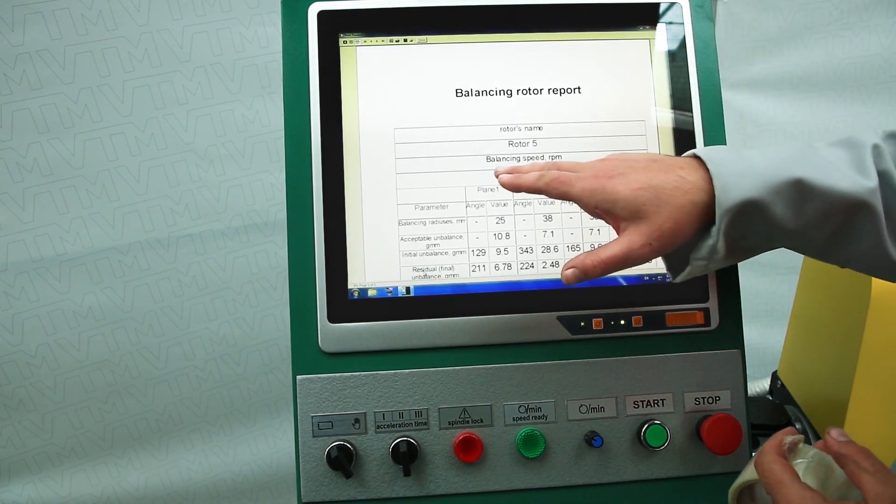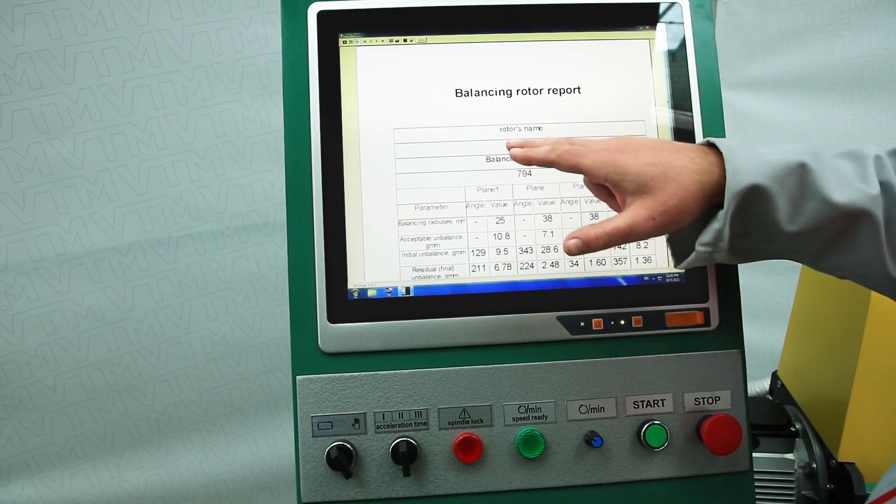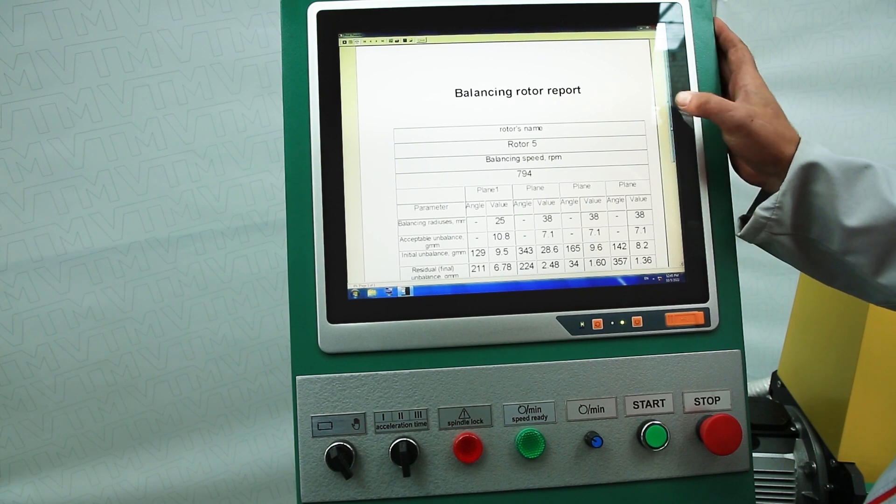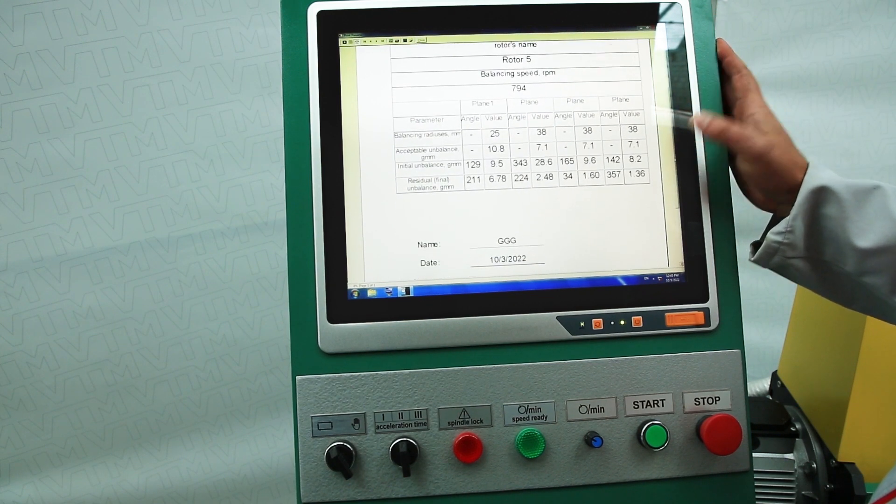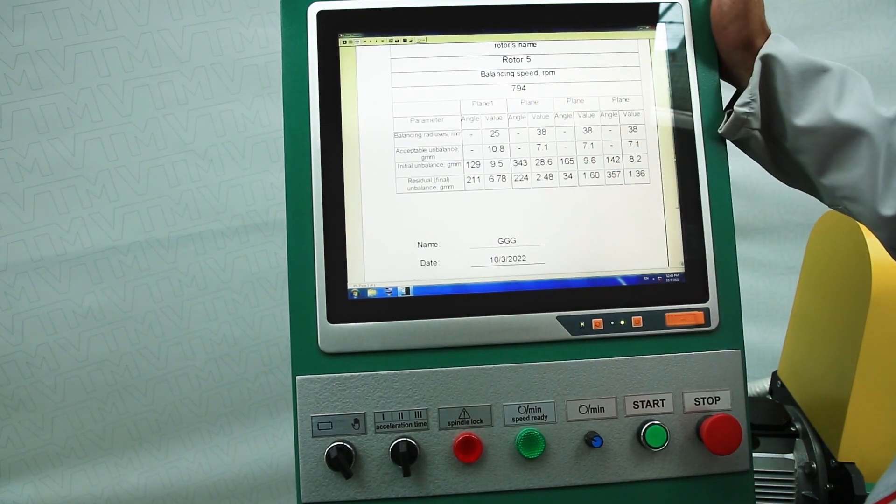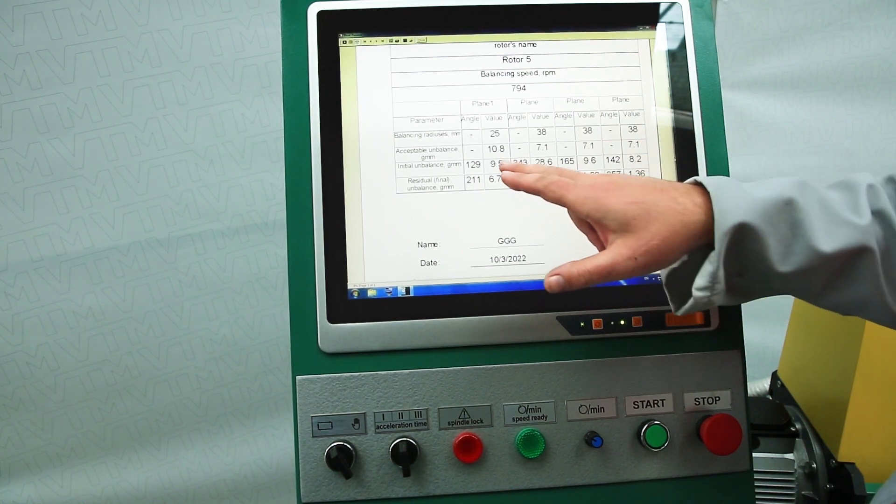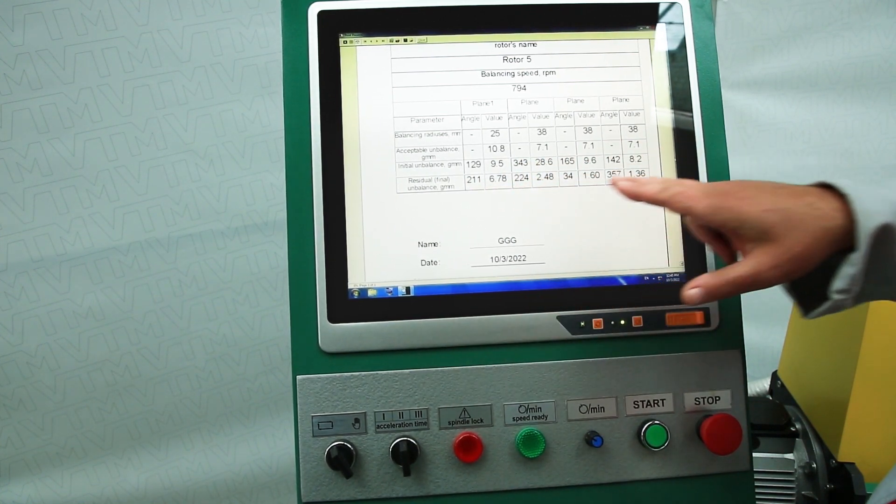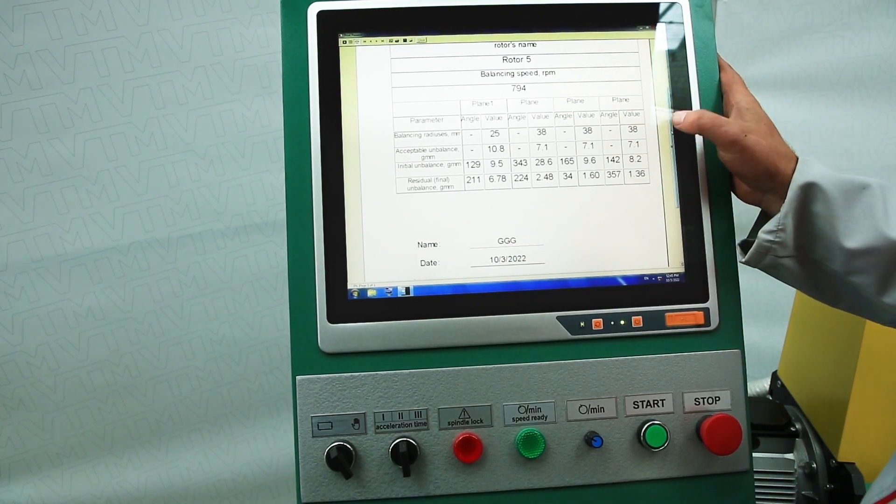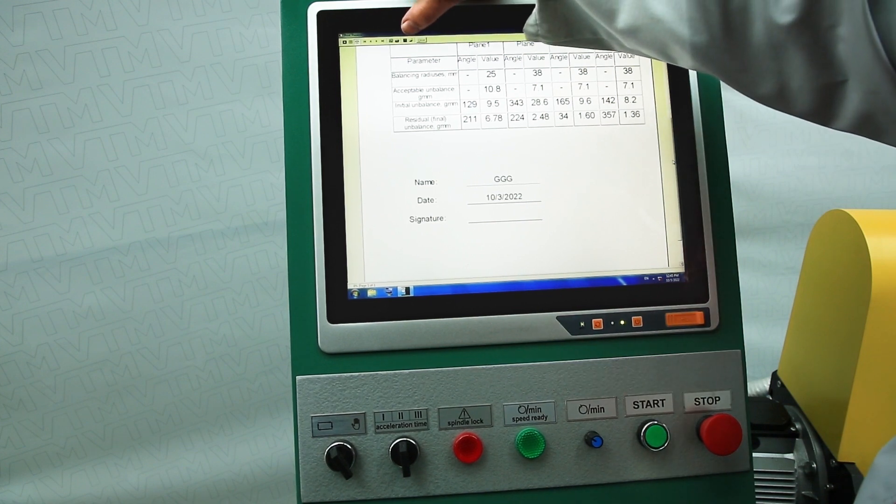The report has been created. The speed at which balancing took place is displayed, the name of the rotor is displayed, all four correction planes are displayed, balancing tolerances, initial and final imbalances, operator name and date are displayed. Then we can either save the report or print it.